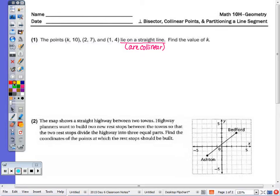If the three points are collinear, that means the slope of these two is equivalent to the slope of these two. So plugging into the slope formula, y2 minus y1, so 7 minus 10 over 2 minus k. That's equivalent to y2 minus y1, 4 minus 7 over 1 minus 2. I'm going to simplify. 7 minus 10 is negative 3 over 2 minus k equals negative 3 over negative 1.